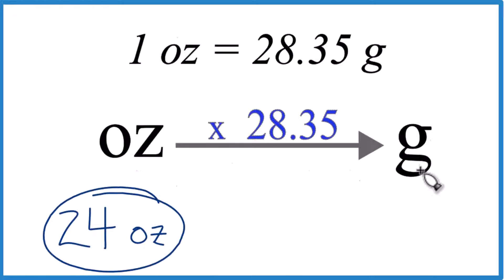Let's convert 24 ounces to grams. So here's how you do it. One ounce equals 28.35 grams. So this is a conversion factor, and we need it when we go from ounces to grams.